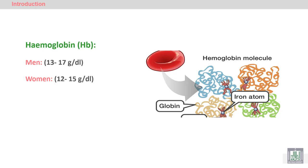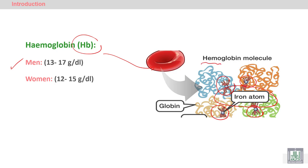Hemoglobin is found inside the red blood cell. It is a protein responsible for transportation of the heme part, and the iron which constitutes the major part of the heme is responsible for transportation of gases. Hemoglobin differs in males from females because of the stimulating effect of androgenic hormones. Hemoglobin is formed by heme and globin — four globin chains and four heme groups, each consisting of an iron atom.